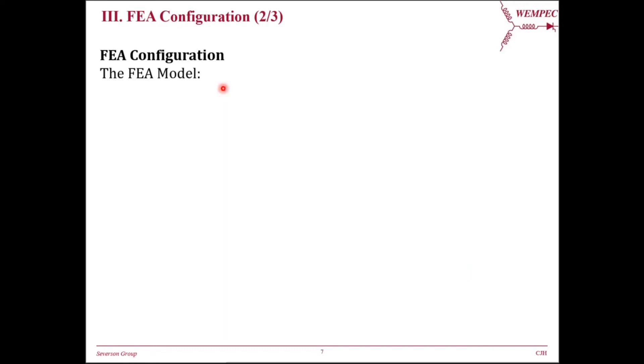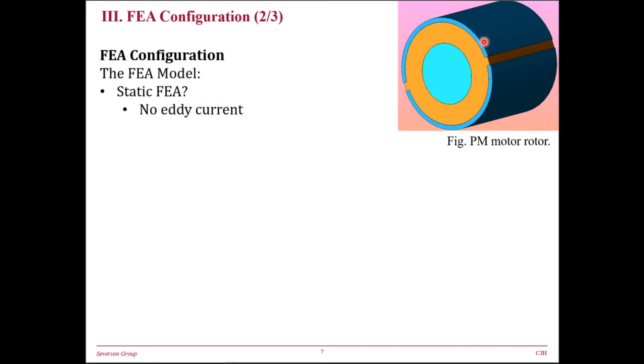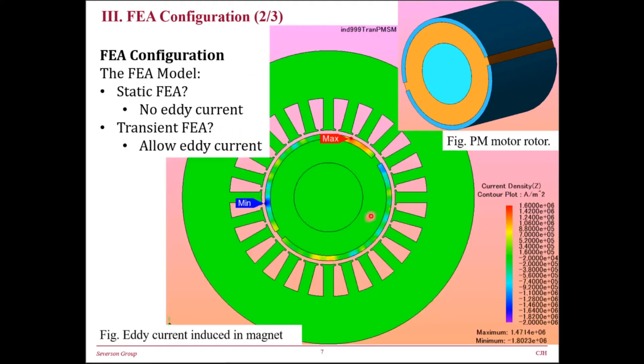Unlike an induction machine, a PM motor design can be evaluated with a series of static FEA at different rotor positions if we assume there is no rotor current induced. However, since the magnet is not laminated and it is conductive, so there will be eddy current induced in the magnet, and this can be captured with transient FEA. This contour plot shows typical current density value in permanent magnets. Green means no current, red and blue mean positive and negative current respectively. The maximum value is 2A per mm squared, which is about half of stator current density. So the conclusion here is that we want to use transient FEA to accurately model the magnet eddy-current effect.